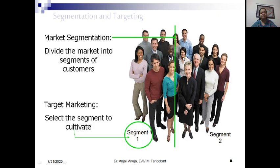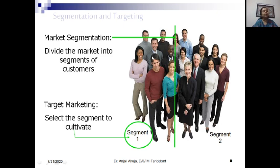The second step is targeting. Now we have two segments in front of us. We can either serve both segments — making two different products for each — or if we want to serve only one segment, we choose one of them. Suppose we choose segment one; that becomes our target market for which we are going to make the product and offer a solution for that particular type of need. This is targeting, the second step of marketing.